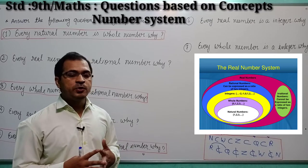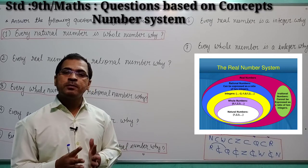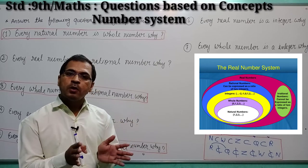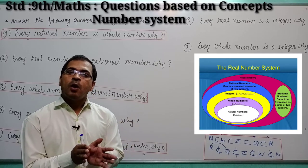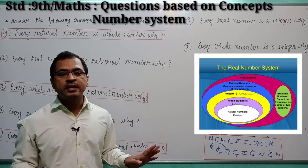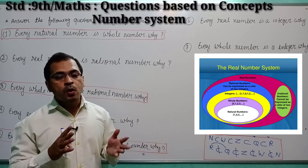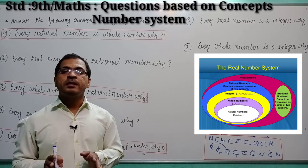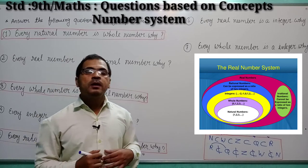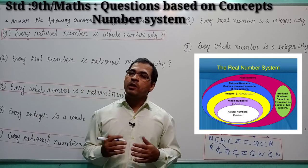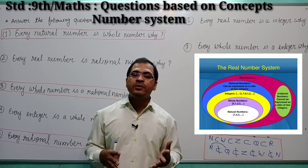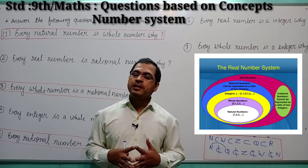Whole numbers — students, whole numbers are those numbers we can count. Whole numbers means all the positive counting numbers, meaning all the natural numbers including 0. All the positive counting numbers and negative counting numbers including 0 are known as integers.